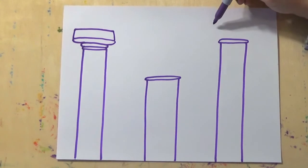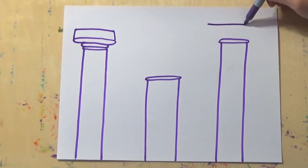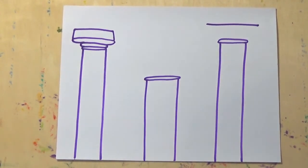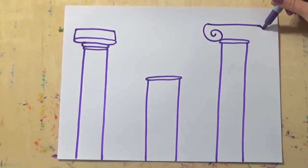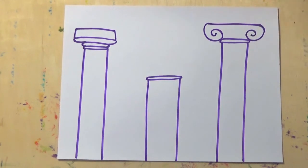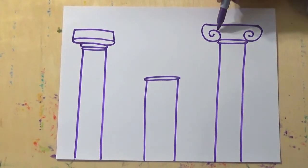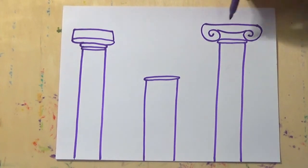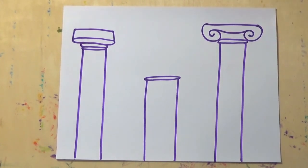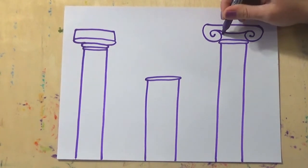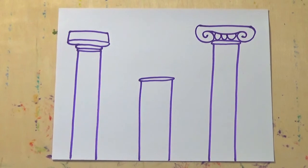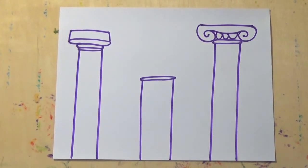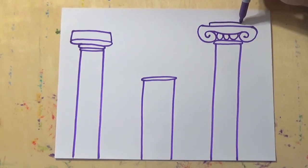Our second column is the Ionic with the swirls on the side. Start with a line on top, then add a spiral line off of each side — here's our first spiral, here comes our second spiral. Now add a curved line right in between those two connecting them. Then add a couple of curved lines underneath, almost a U-shape. They're slightly more decorative than the Doric, and that's why we added a few extra designs.